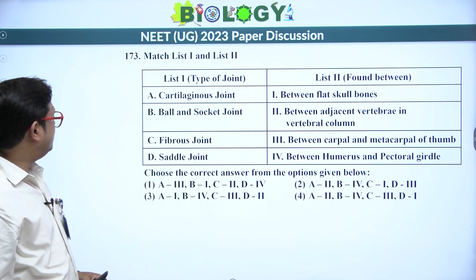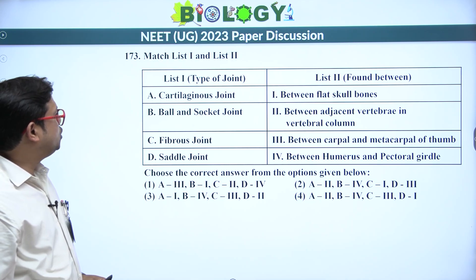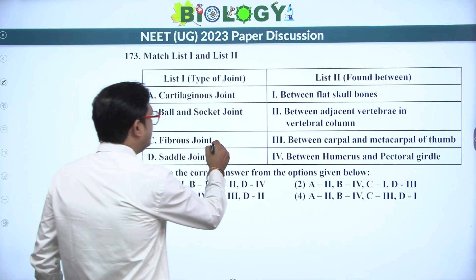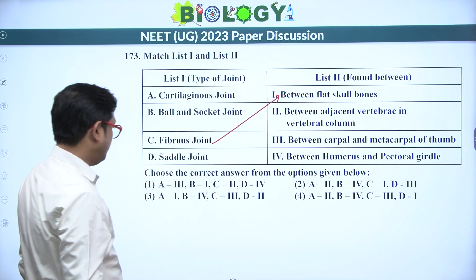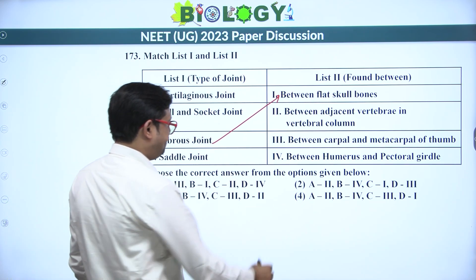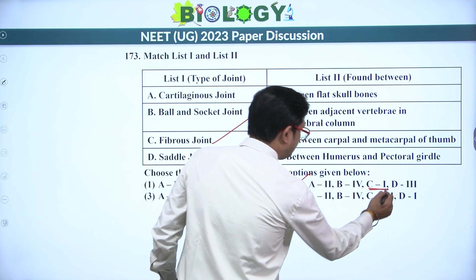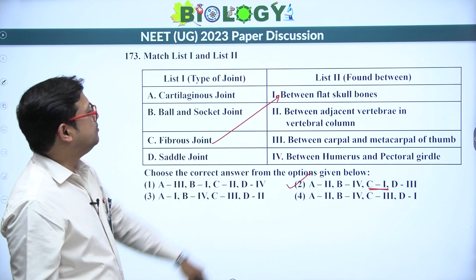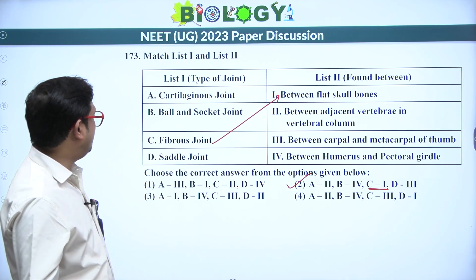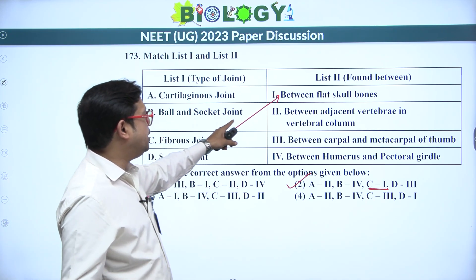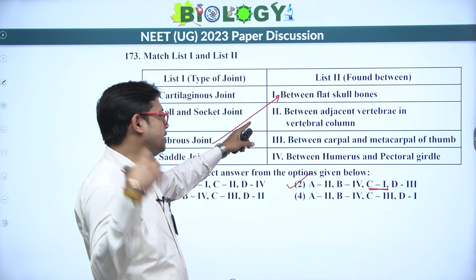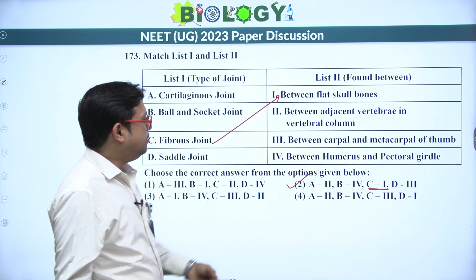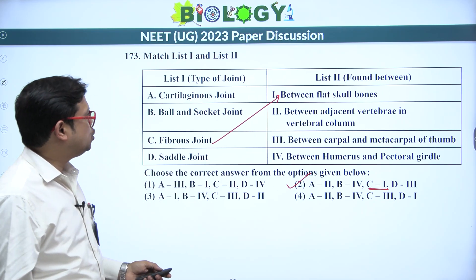Next: match the column for joints. Fibrous joint between flat skull bones — immovable joint, C is 1. Cartilaginous joint between adjacent vertebrae of the vertebral column — partially movable. Ball and socket joint between the humerus and pectoral girdle. Saddle joint between the carpal and metacarpal of the thumb. Answer is 2.